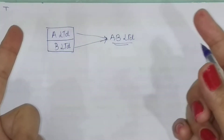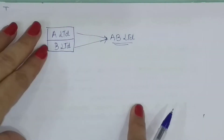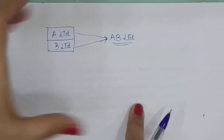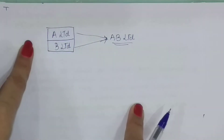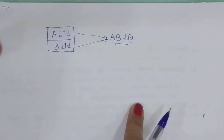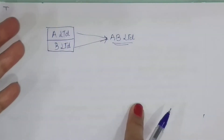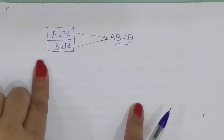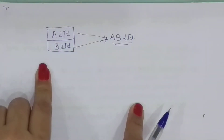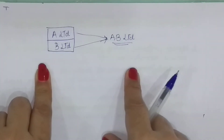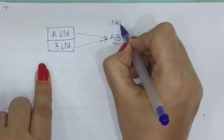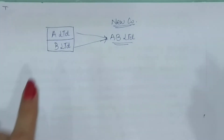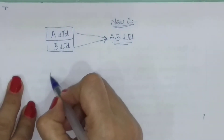Minimum two companies are needed, but there can be three companies also wanting to combine the business. So when two or more companies want to join the business, one way is that all the companies in question go into liquidation and a new company is formed to take over the combined business. This is one way.